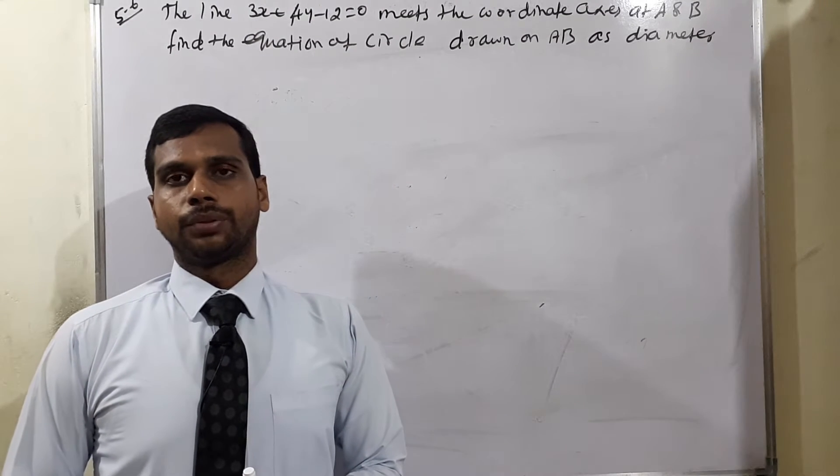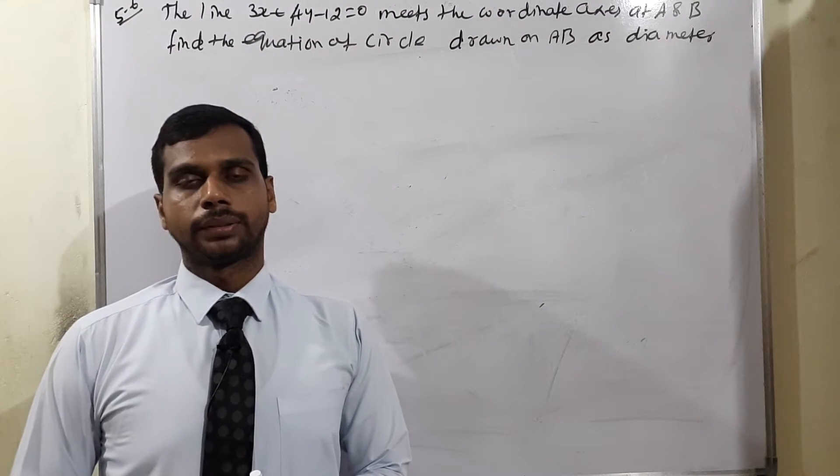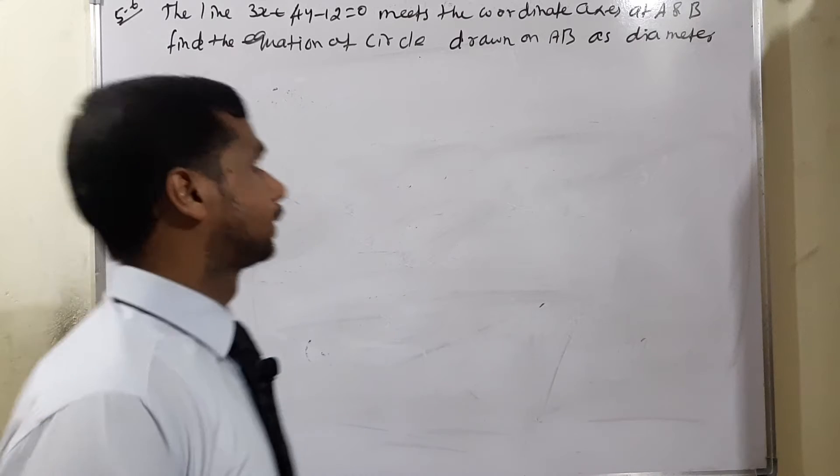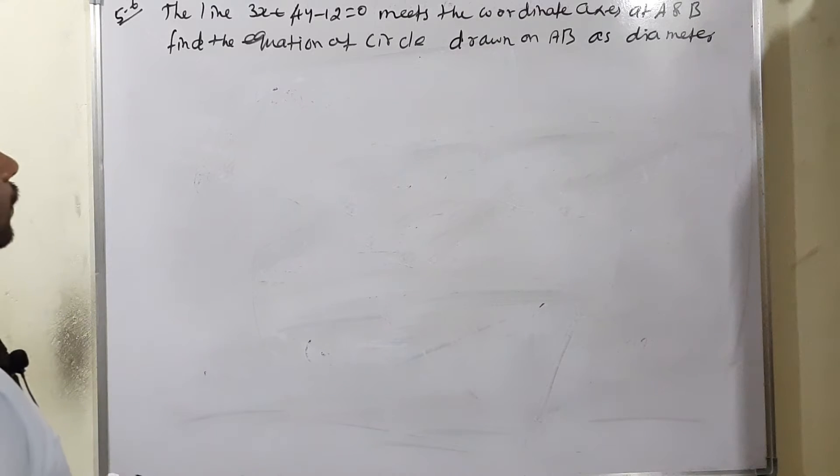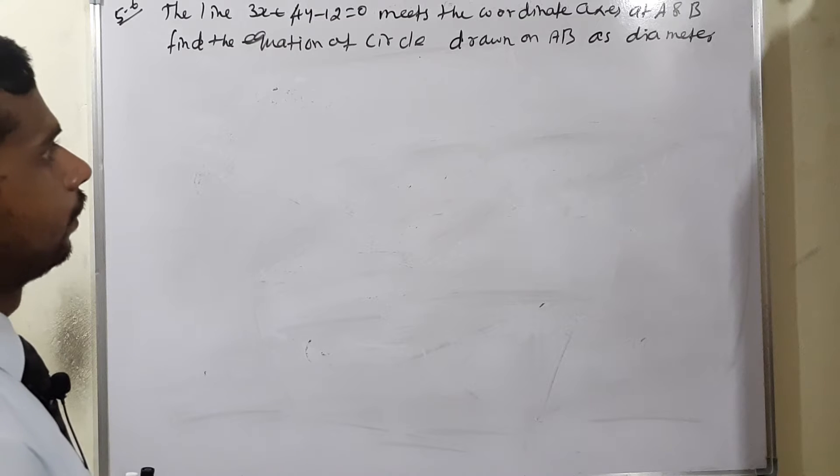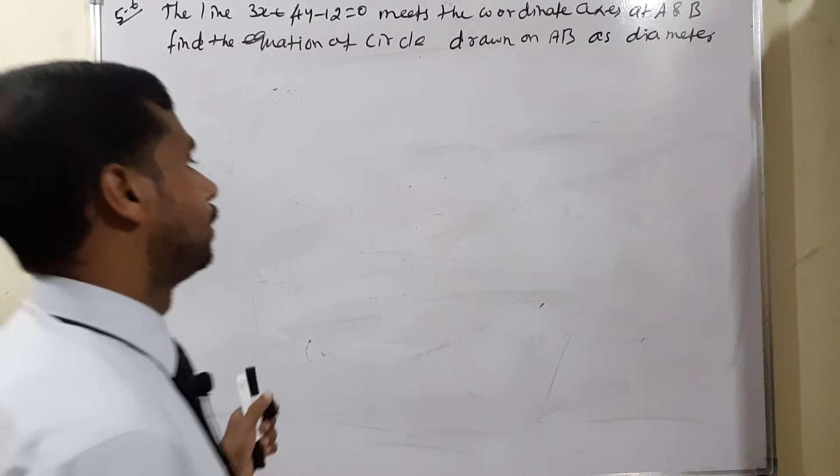Good evening viewers, welcome to Tenimax. I am moving to continuation of example 5.6. Question: The line 3x plus 4y minus 12 equals 0 meets the coordinate axis at A and B. Find the equation of circle drawn with AB as the diameter.